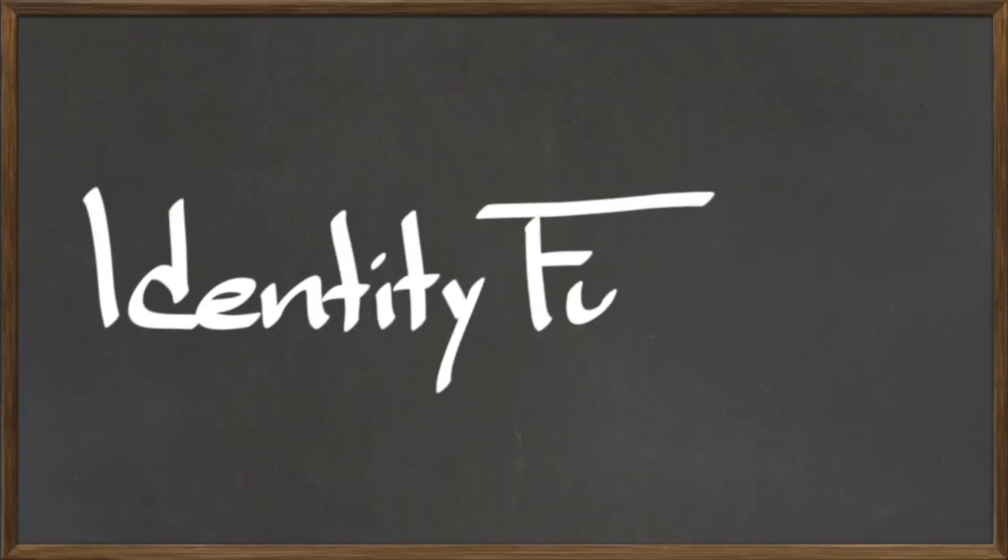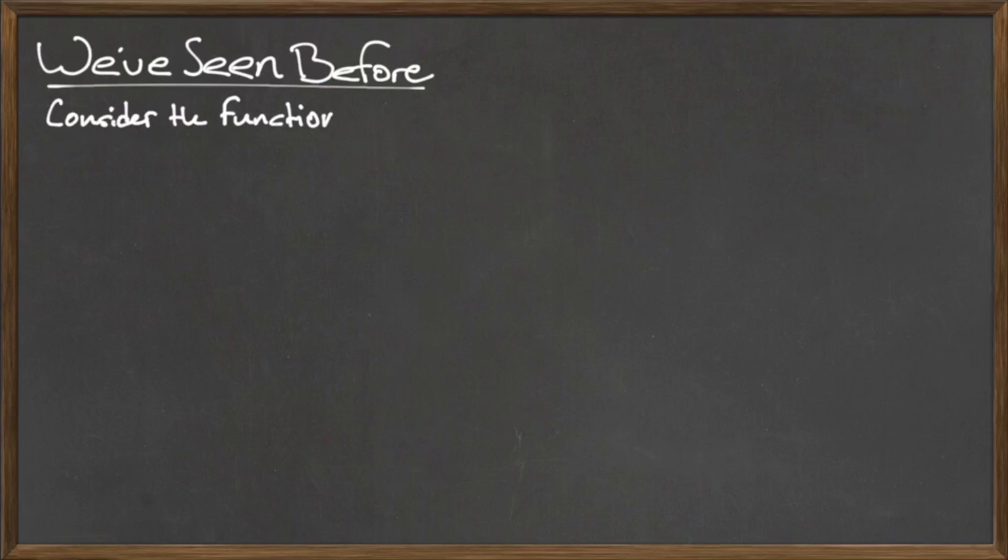In this video we will discuss identity functions. We've actually seen an example of an identity function before. Consider the function g from Z6 to Z6 given by g(a) = a³ mod 6.